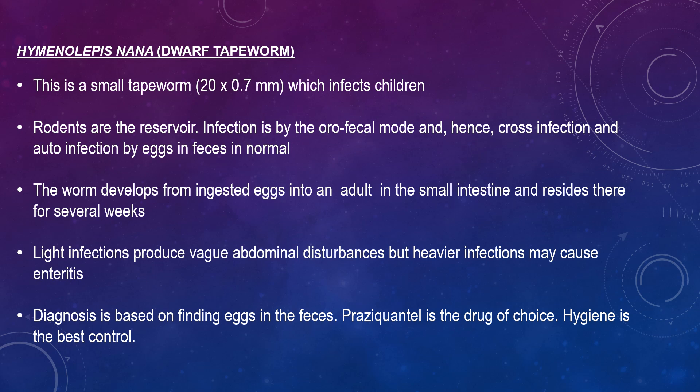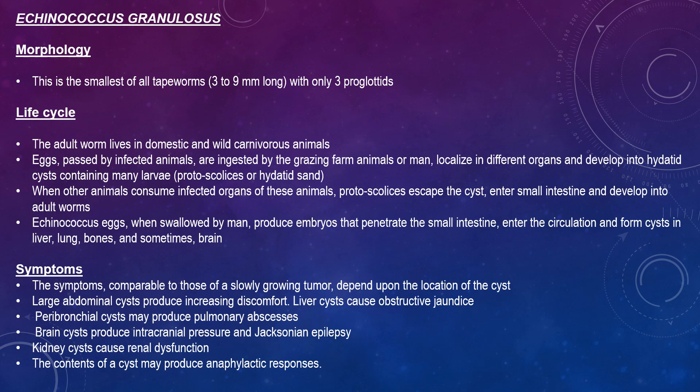Hymenolepis nana, the dwarf tapeworm, is a small tapeworm 20 x 0.7 mm that infects children. Reservoirs are rodents. Infection is by the oral-faecal route, and therefore cross-infection or auto-infection by eggs in faeces are common. The worm develops from ingested eggs into an adult in the small intestine and resides there for several weeks. Light infections produce vague abdominal disturbances, while heavy infections may cause enteritis. Diagnosis is based on finding eggs in the faeces. Niclosamide is the drug of choice and hygiene is the best means of control.